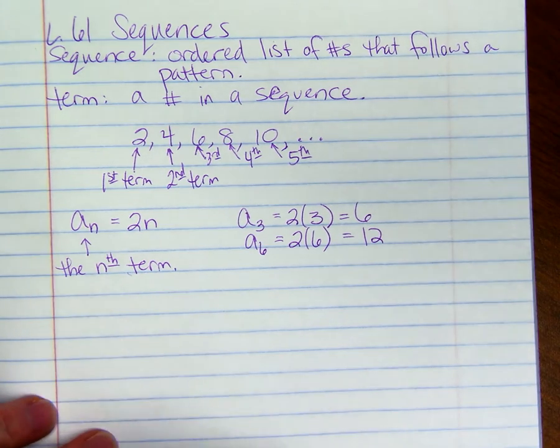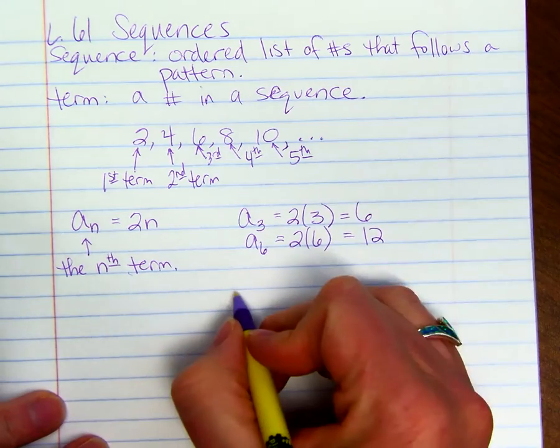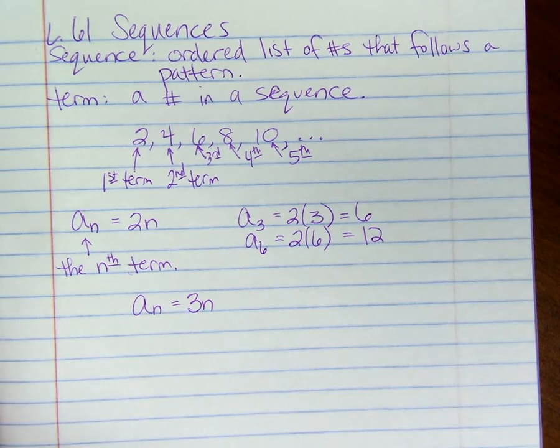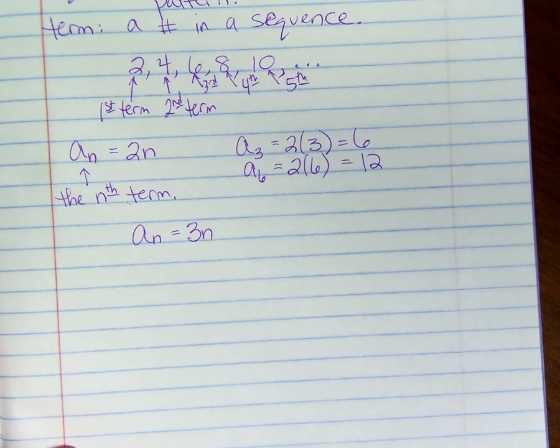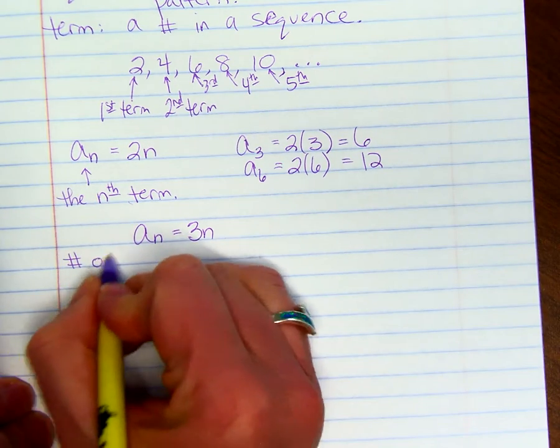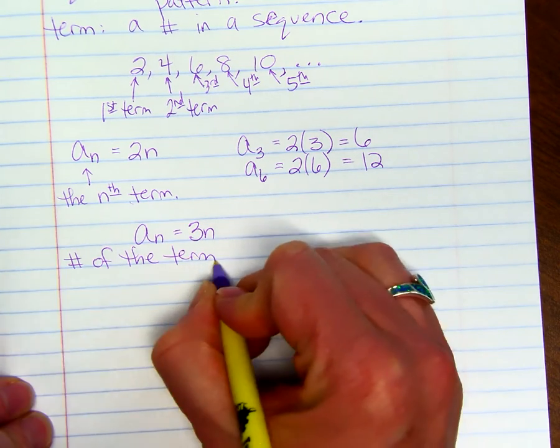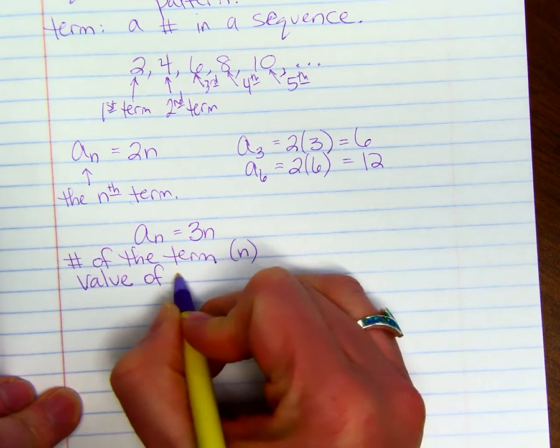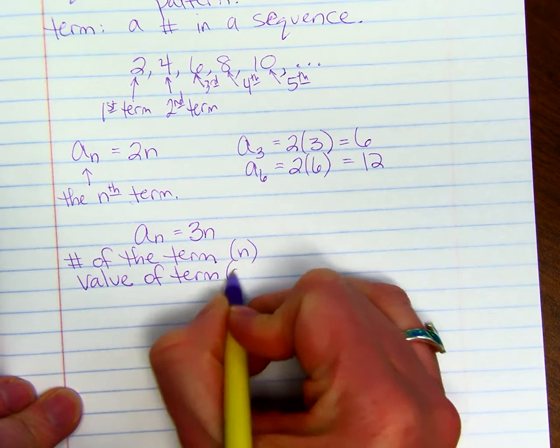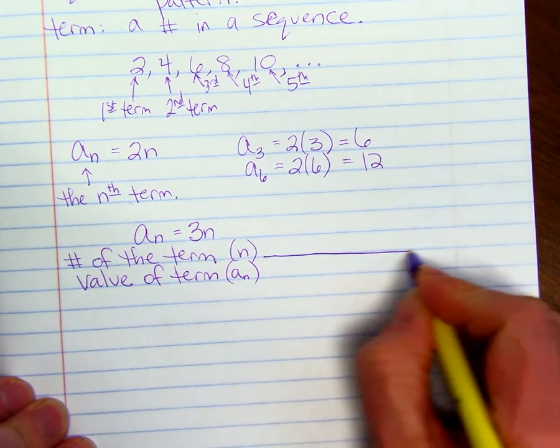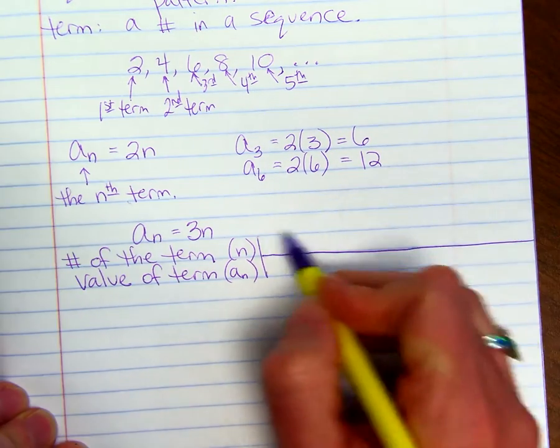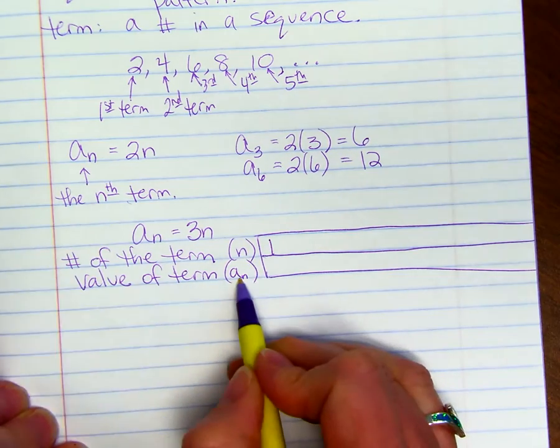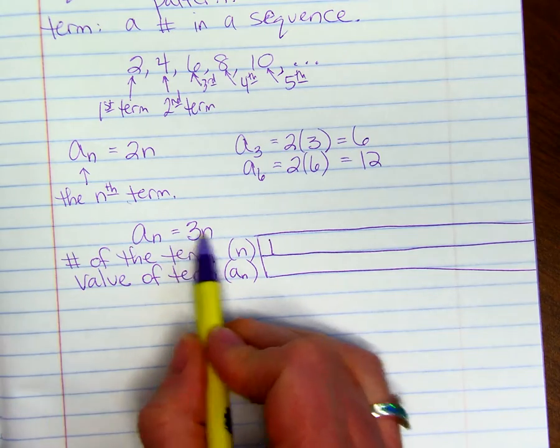If we have a formula and we want to figure out what the sequence is, let's say our formula is a sub n equals 3 times n. We can write a table and we have the number of the term, that will be our n, and then the value of the term is our a sub n. If n is 1, a sub 1 will be 3 times 1, or 3.